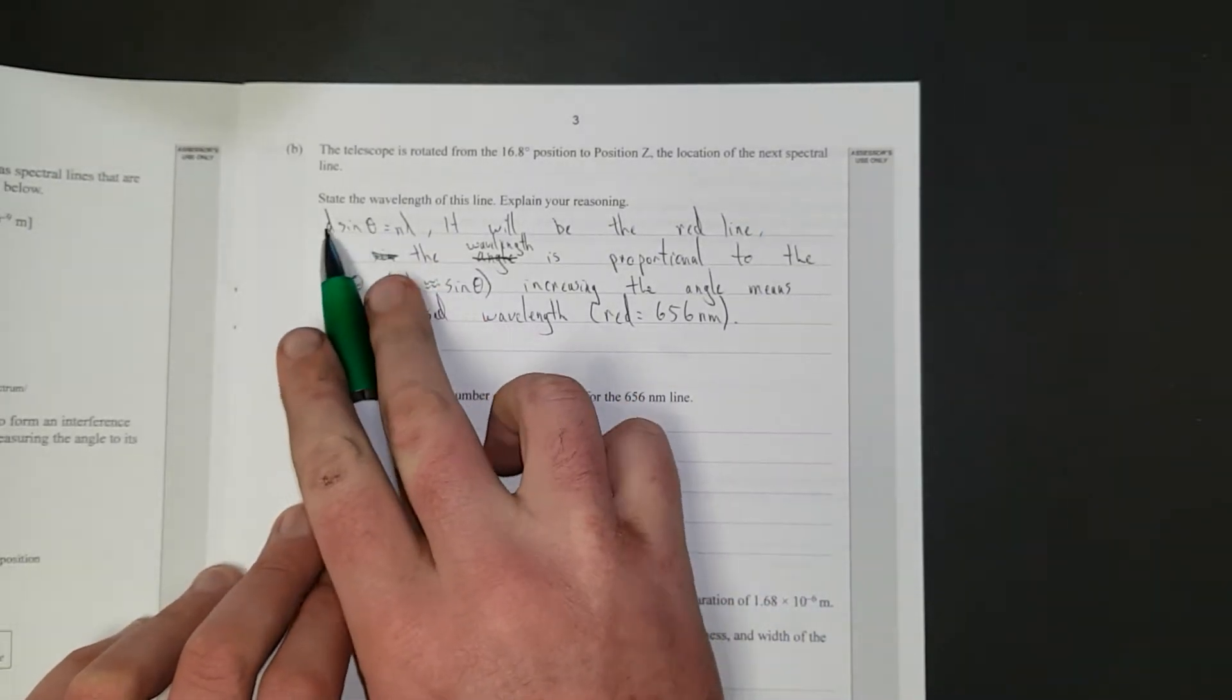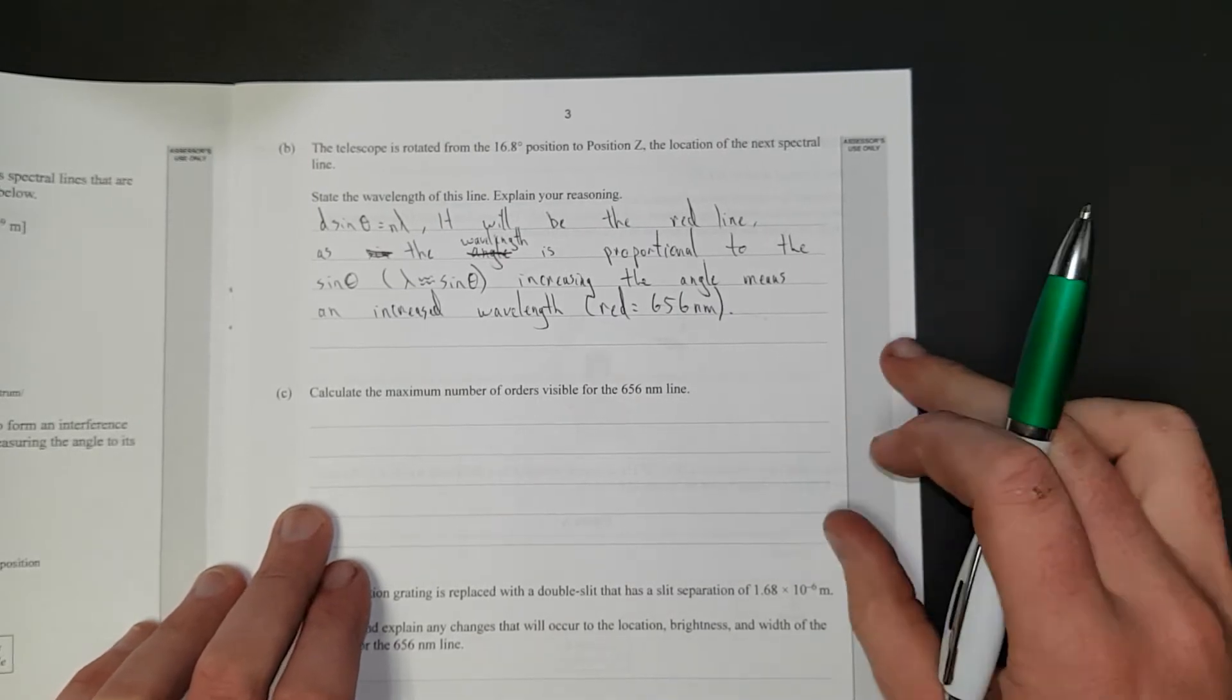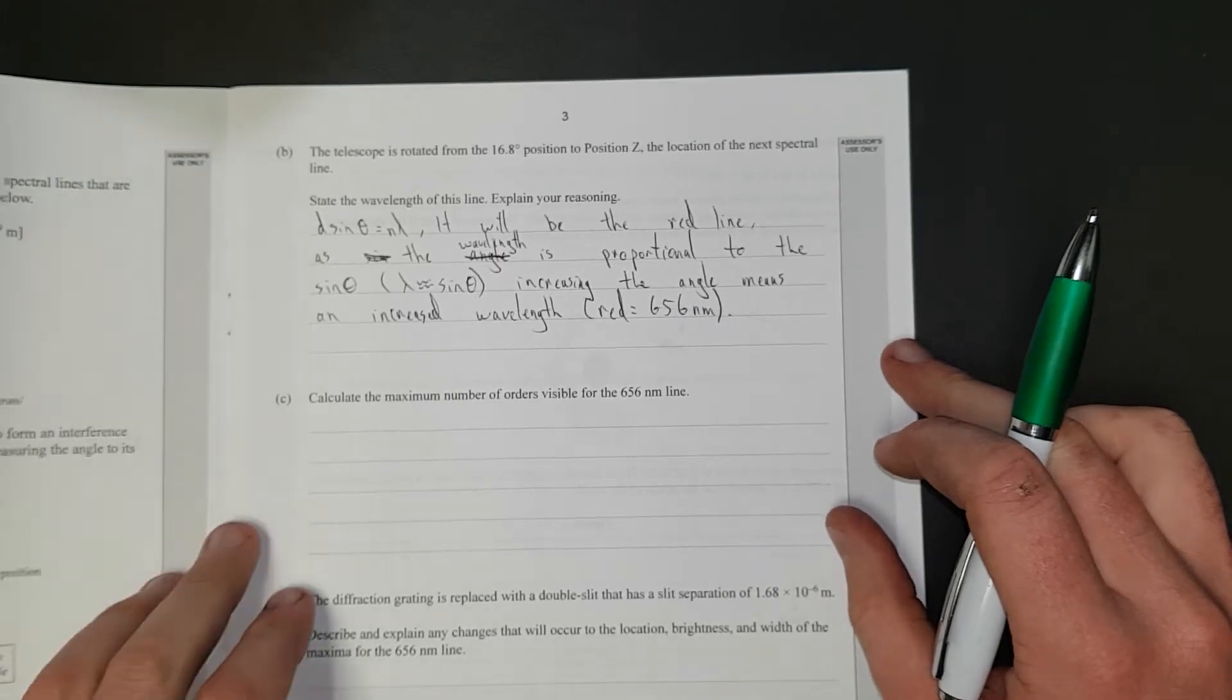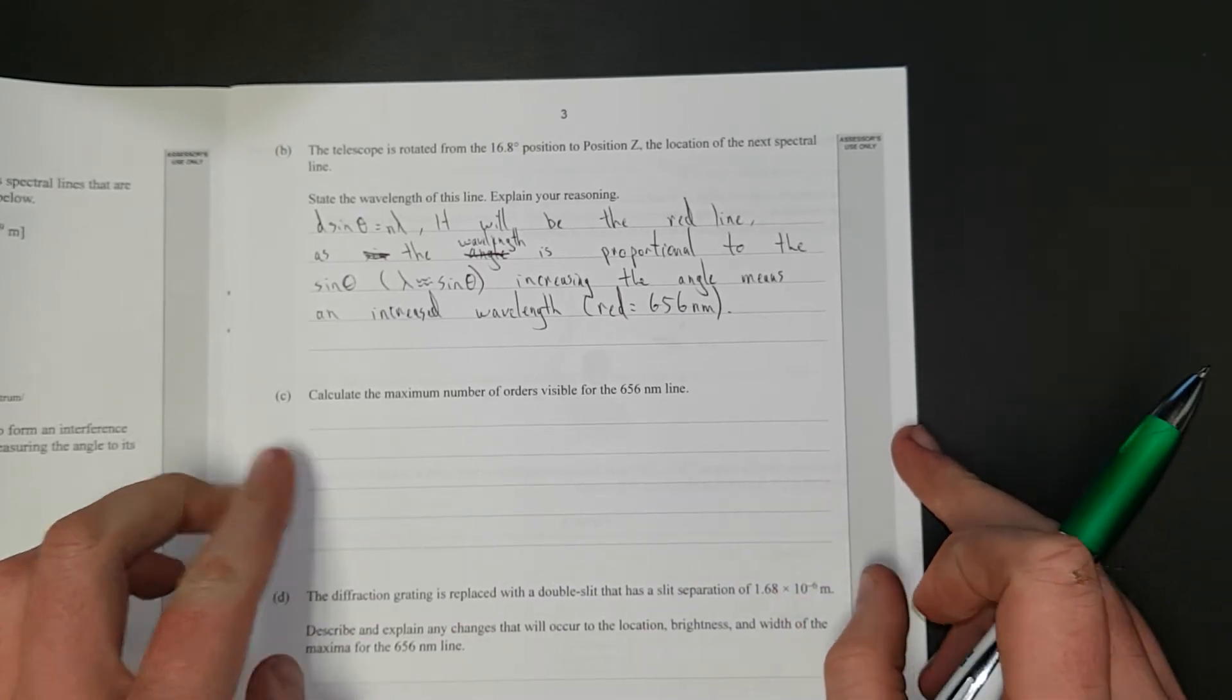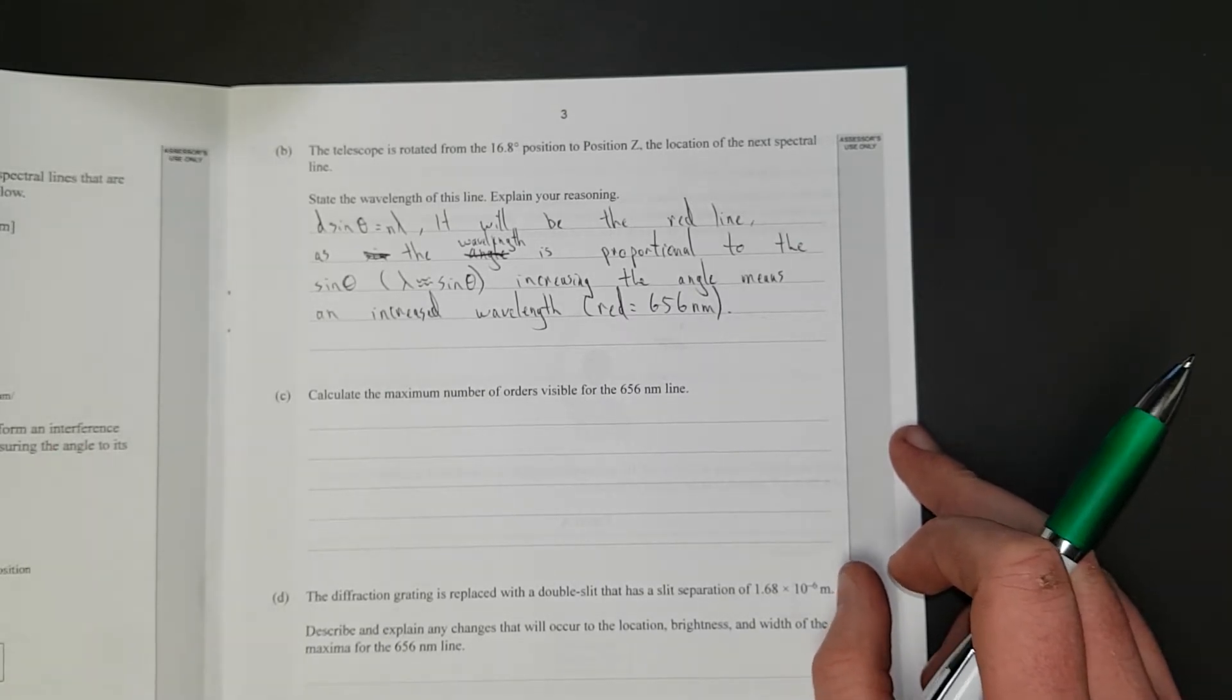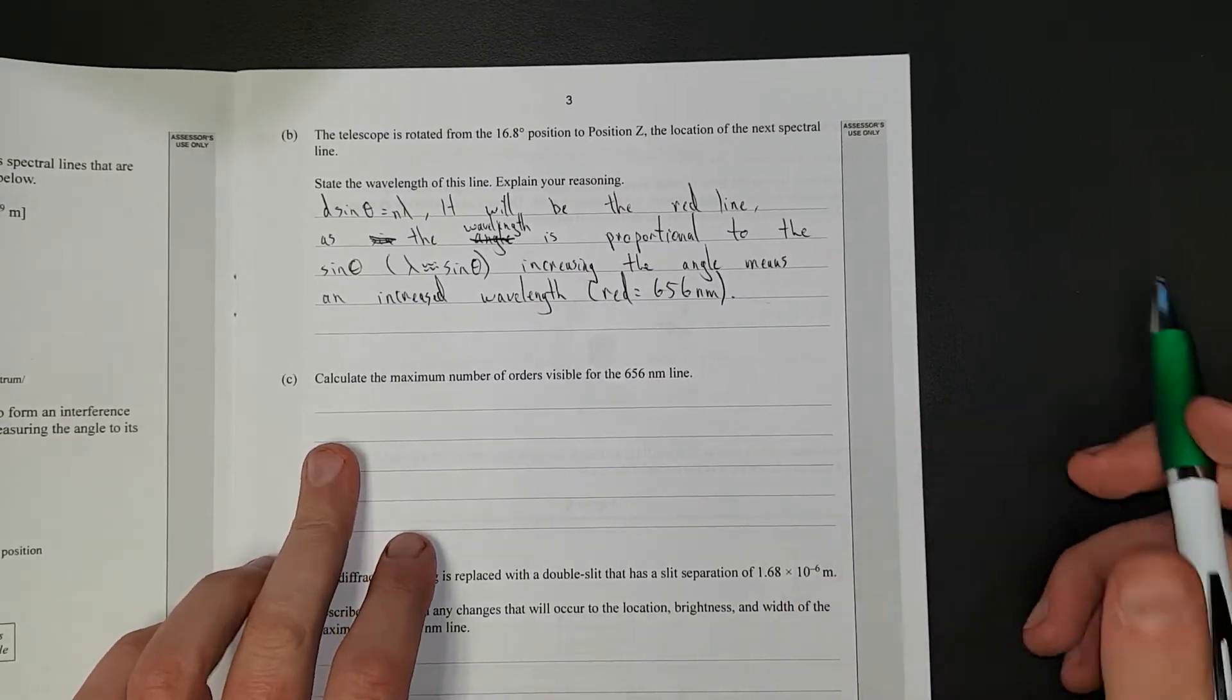Right, so I've said the formula, D sine theta equals n lambda. It will be the red line. There's a few ways to go about this. The first way I thought of was the larger the wavelength, the more it's going to diffract, because it's going to be closer to the slit size, because the slit size is huge compared to the light. It is ridiculously big compared to the actual wavelength of the light. So as you get larger wavelengths, as you go up the spectrum from green to red, green's 486, red's 656.